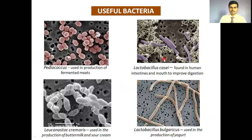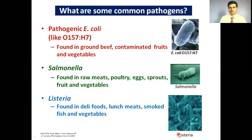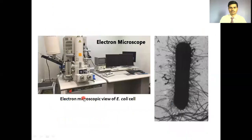Some examples of useful bacteria: Pediococcus is used in production of fermented meats; Lactobacillus casei is present in the human intestine and mouth; Leuconostoc cremoris is used in production of buttermilk and sour milk; and Lactobacillus bulgaricus is used in production of yogurt. Some harmful bacteria include certain strains of E. coli and Salmonella, which are harmful to humans.